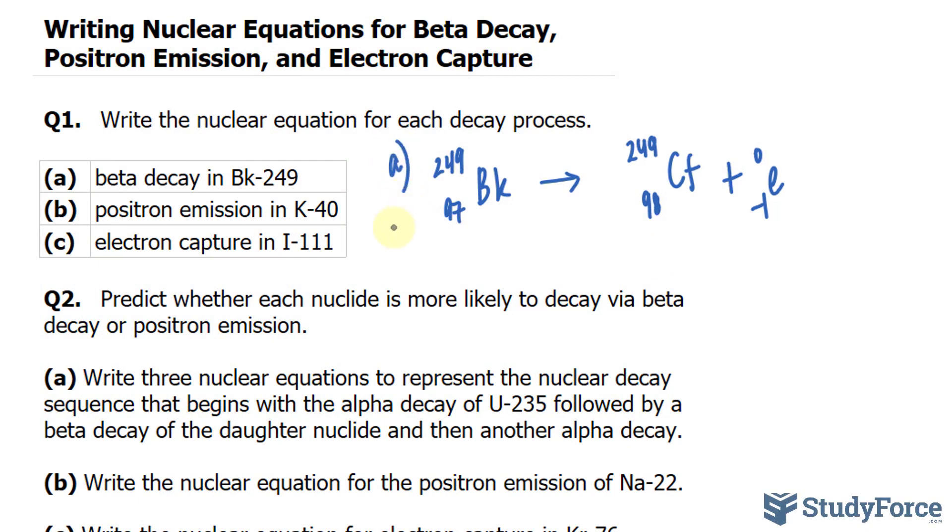Positron emission in K-40. Remember, K is potassium. In a positron emission, the atomic number decreases by 1, and the mass number remains unchanged. So it's the opposite of what we did here.